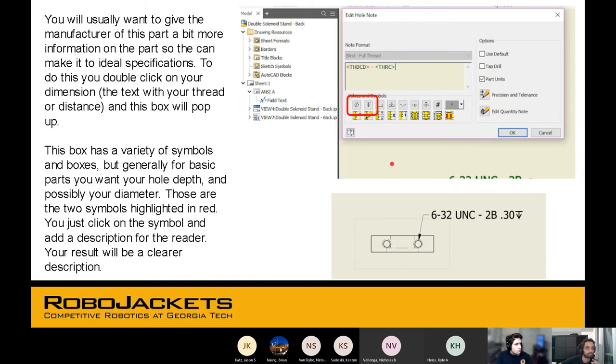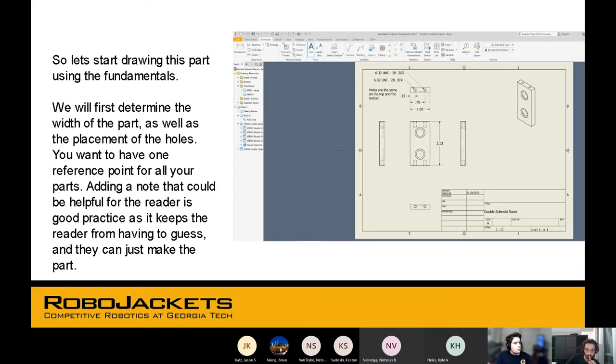You usually want to give the manufacturer a bit more information on the part so that he can make it to your ideal specifications. You can double click on the dimension and this kind of box will pop up. Edit hole. This is the information about the thread and stuff. This box also has a variety of symbols, like how deep you want your hole to be, et cetera. Let's start drawing this part using the fundamentals. We will first determine all of these dimensions. If you have this dimension over here, you don't want to add more dimensions over here. You can also just add notes here: holes are the same on the top and the bottom. There are holes on top and bottom, they're just the same. So now you don't have to repeat this information at the bottom. You just want to prevent guesswork. You want to make it as clear as possible. Your machinist shouldn't have to guess anything.